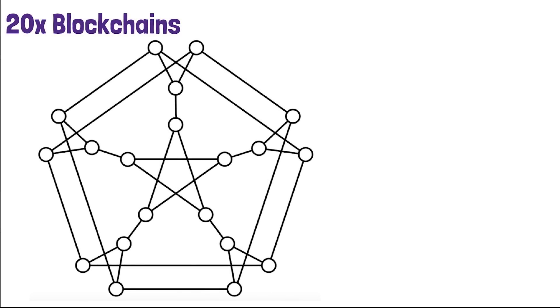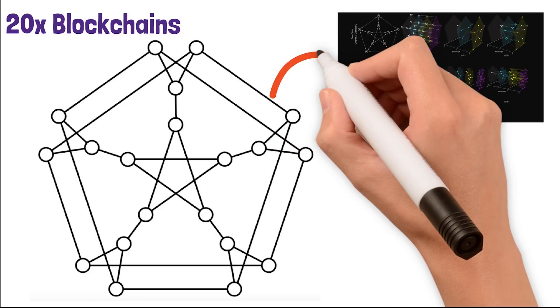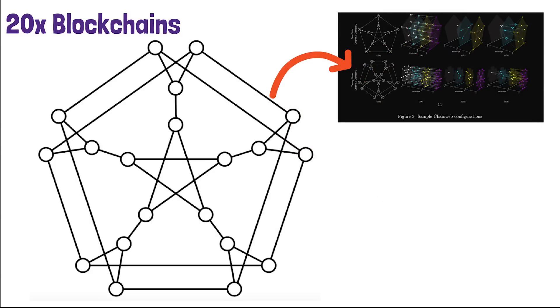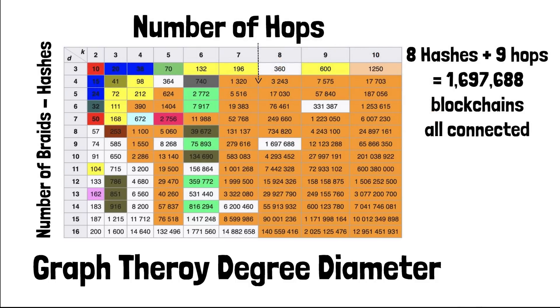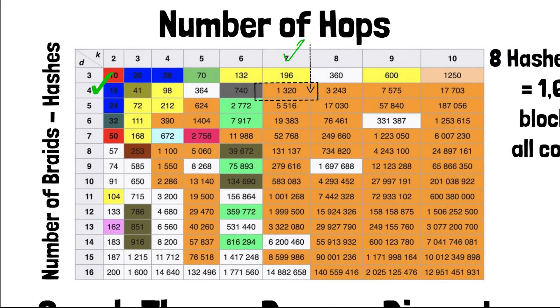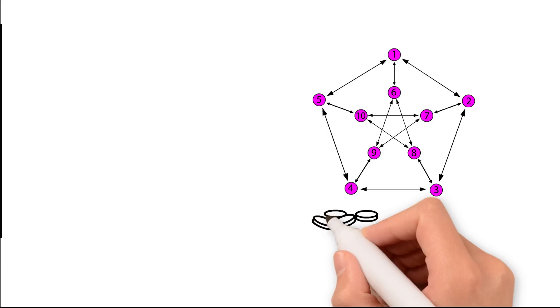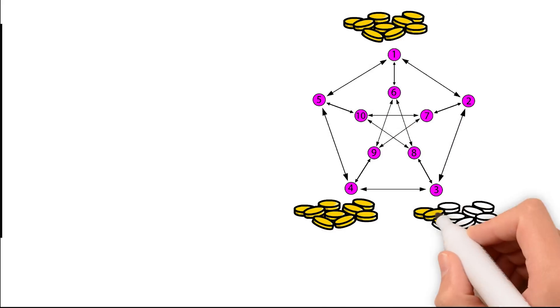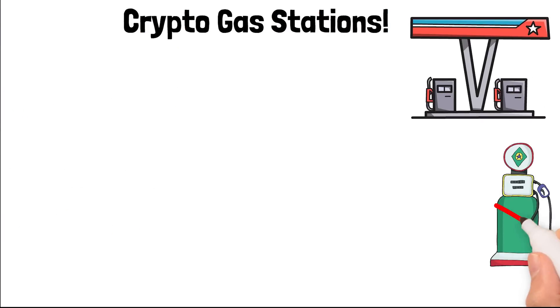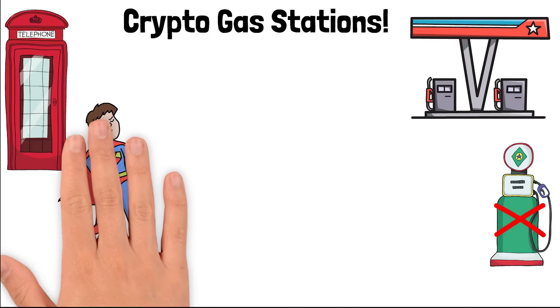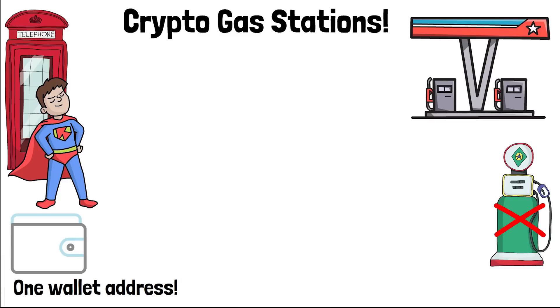For example, if you had coins on chain one and wanted to get to chain nine, you could go from chain one to chain six to chain nine — just three hops. With 20 blockchains, the chains are connected in a star-like pattern. Will Martino used the graph theory degree diameter problem to braid the chains together. When Kadena scales up to 100 or 1,000 chains, the farthest chain will only be four hops away.